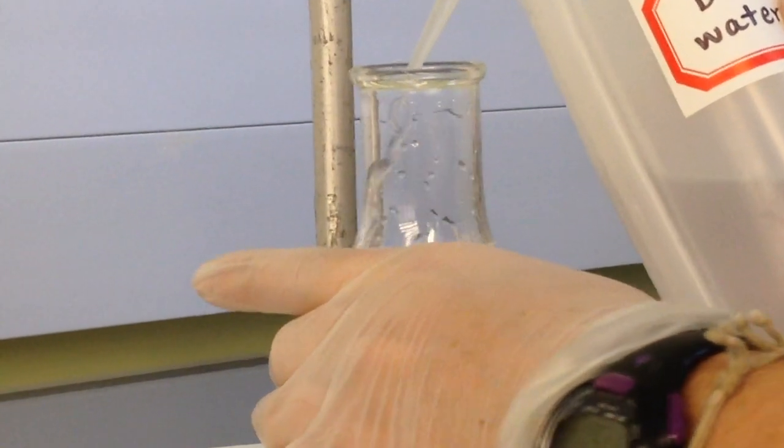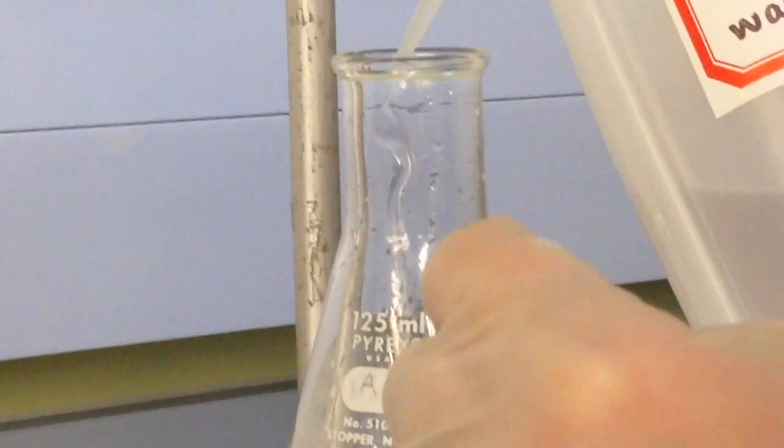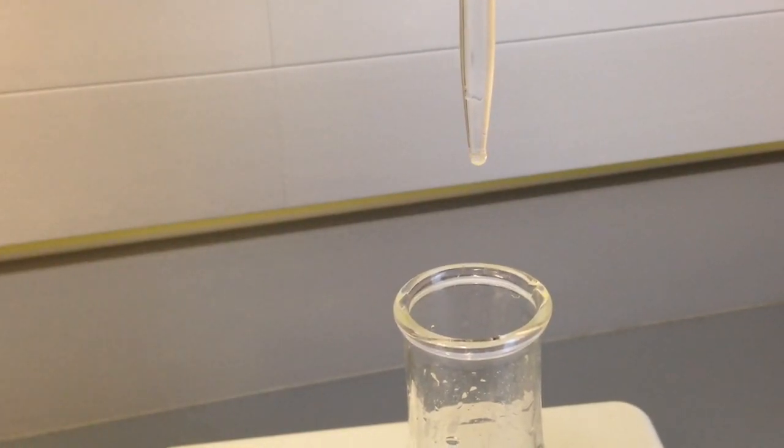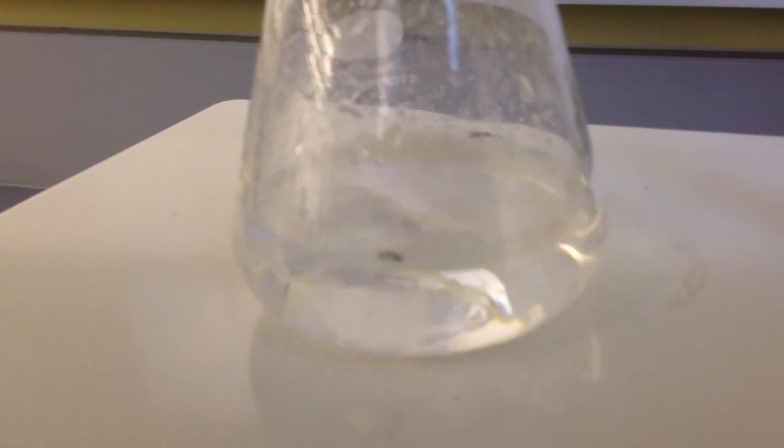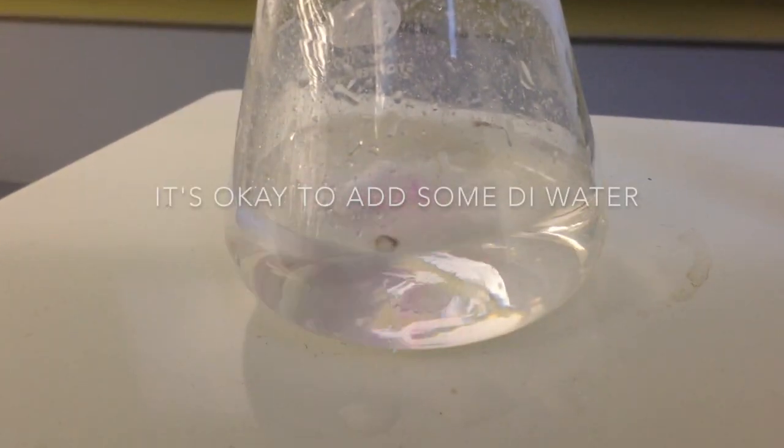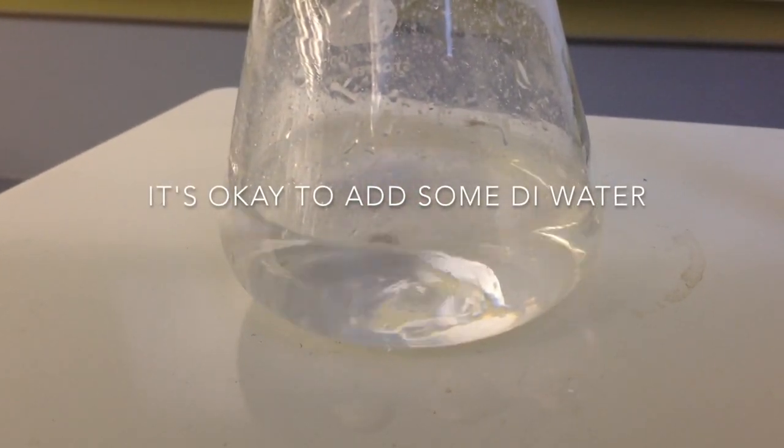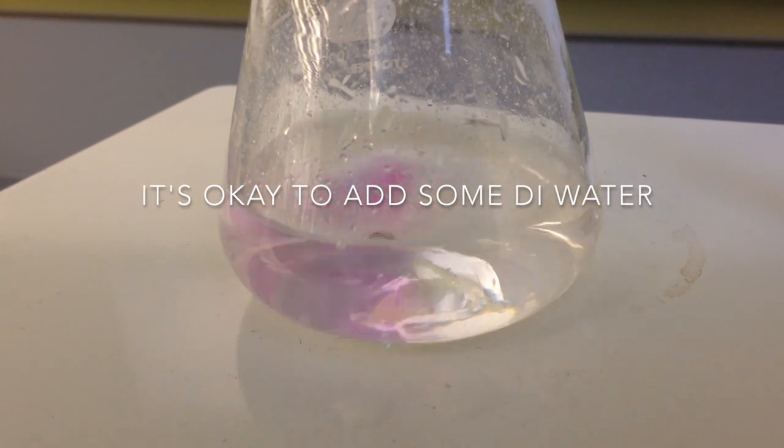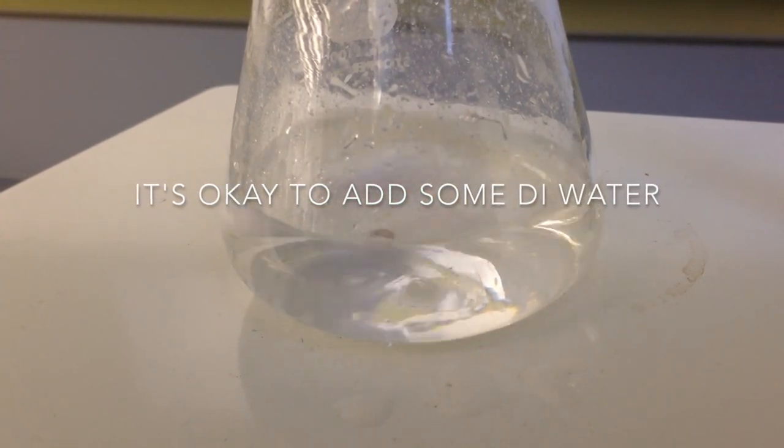Rinse the flask with a few milliliters of deionized water between drops to ensure all the sample remains in solution, because minimal splashing may occur. Don't worry about putting DI water in the sample, because DI water does not affect the molar ratio of the titrant and your sample.